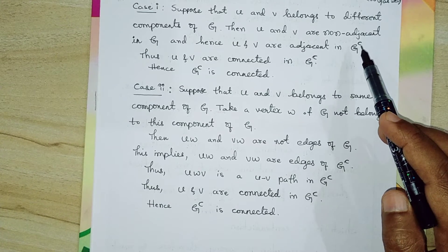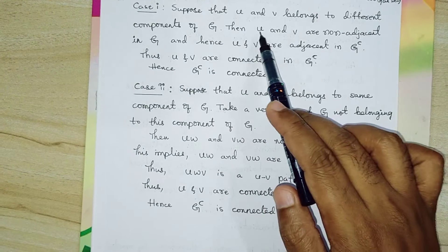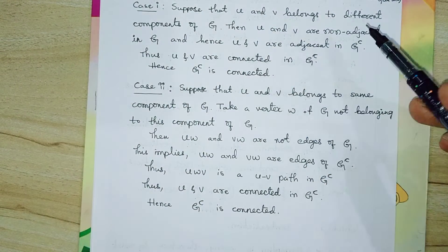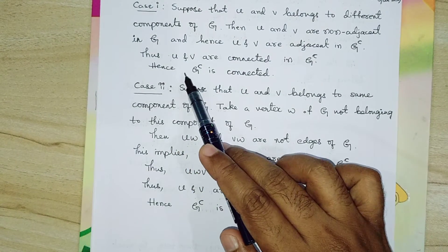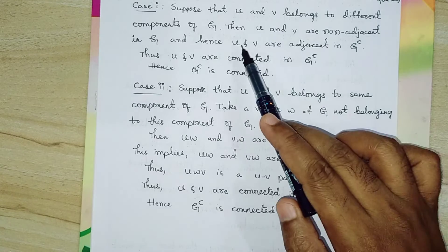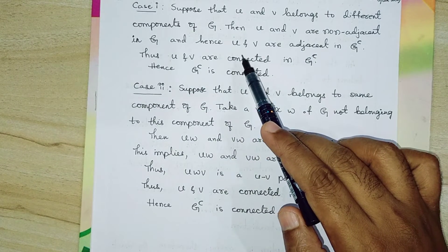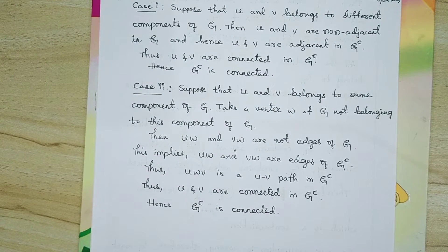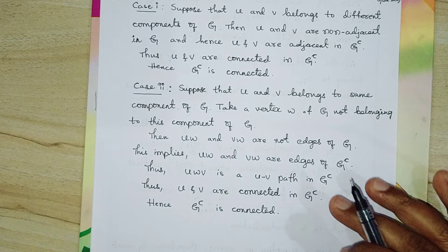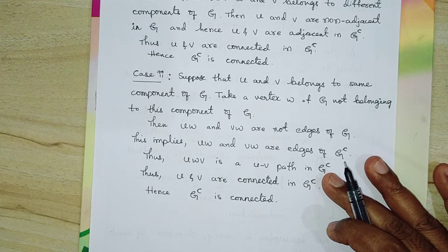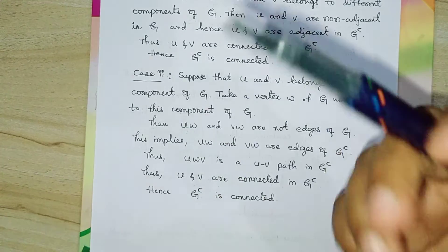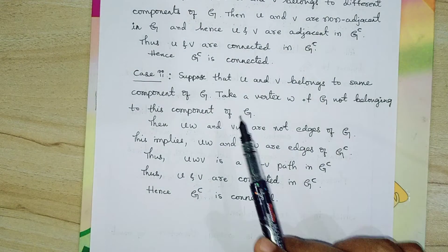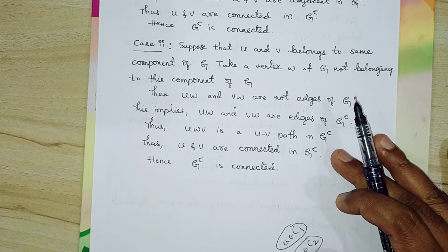Since U and V are not adjacent in G, they are adjacent in G complement — that is how the complement is defined. Thus there is a path between U and V in G complement, so U and V are connected in G complement. Since U and V were arbitrarily chosen, every pair of vertices of G complement is connected by a path, so G complement is connected.